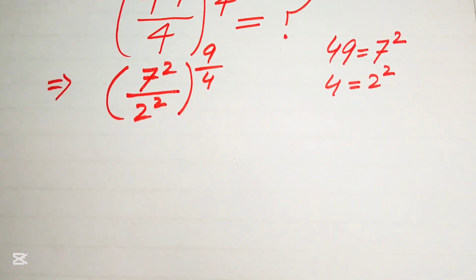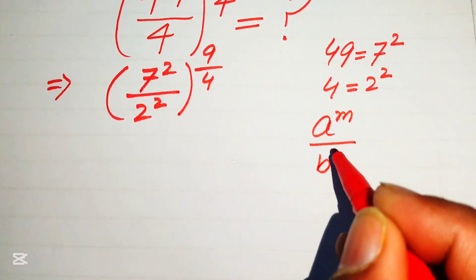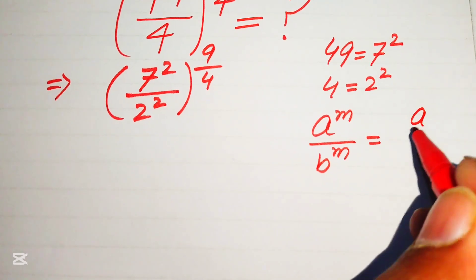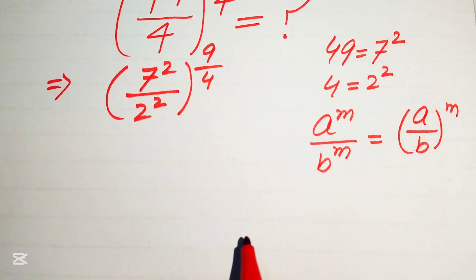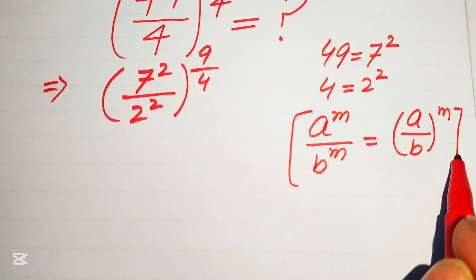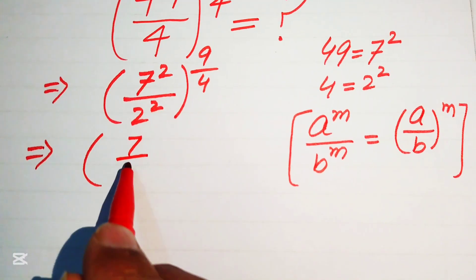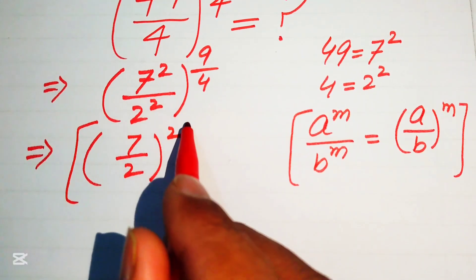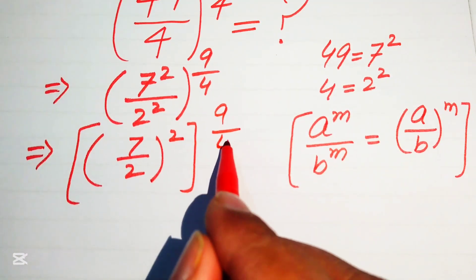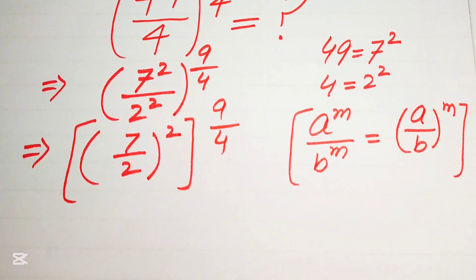We use the exponent law: a to the power of m divided by b to the power of m equals (a over b) to the power of m. According to this law, we write the expression as (7 over 2) whole squared, with its exponent being 9 over 4.